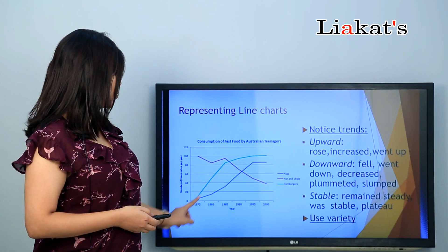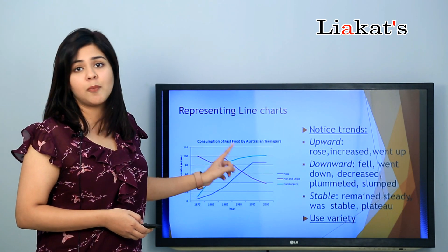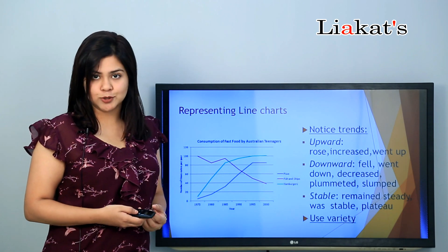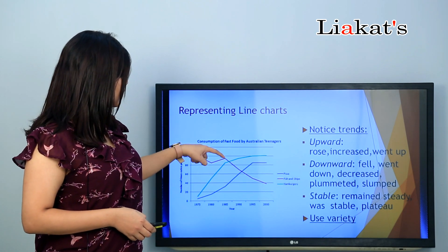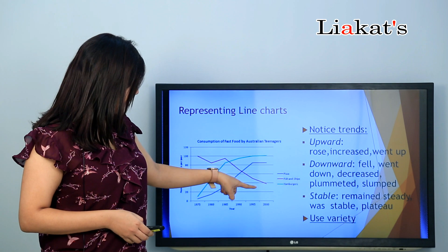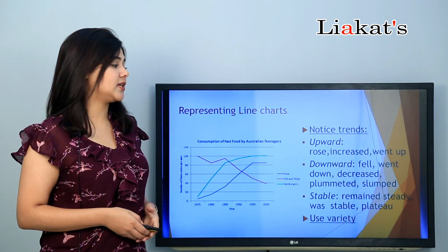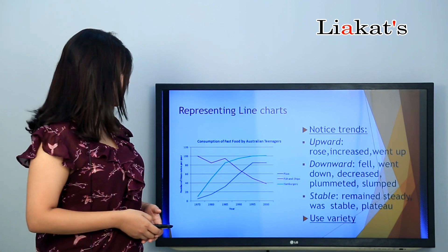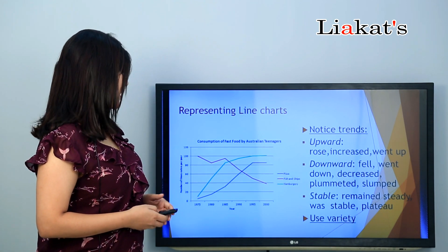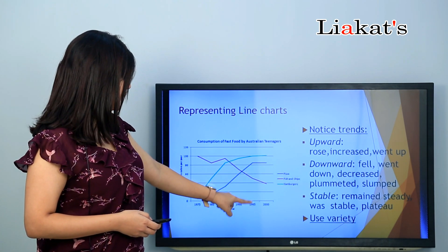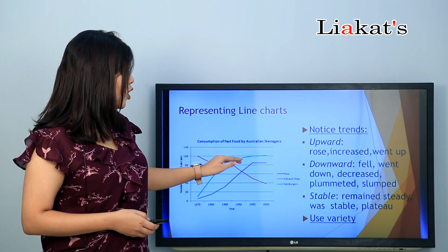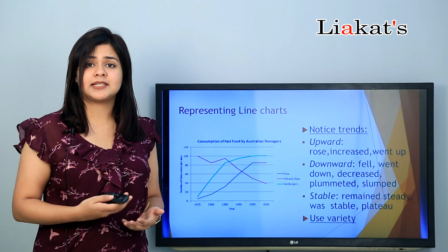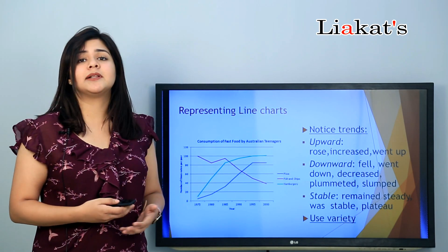We need to notice the trends. An upward trend means the values rose, increased, or went up. A downward trend — for example, if 1985 to 1995 shows lower values — we use words like 'fell,' 'went down,' or 'decreased.' When it is stable — for example, from 1995 to 2000 it did not change — we say it 'remains steady.'